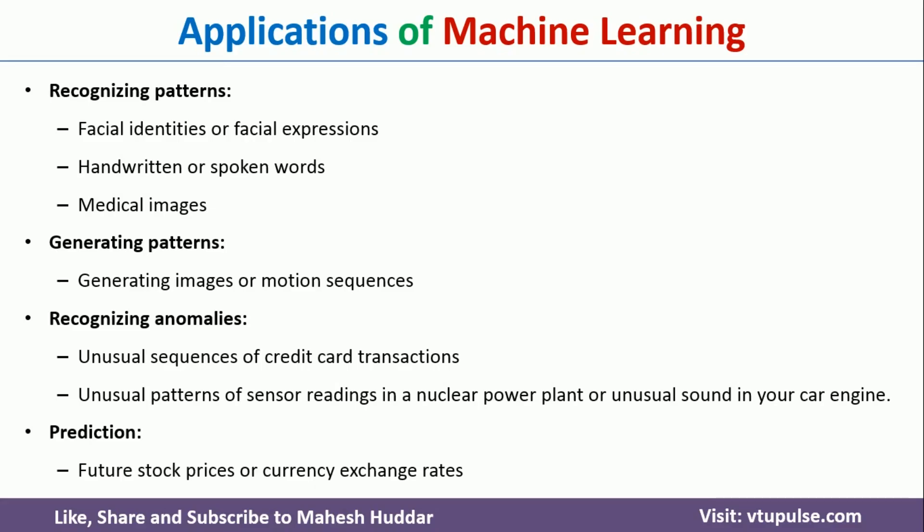Prediction is another very important application of machine learning. We try to predict what will happen in the future. For example, stock price prediction — what will be the stock price for a particular share tomorrow, after 10 minutes, or after 5 minutes. If you want to predict such things, machine learning comes into picture. Similarly, what will be the currency rate today, tomorrow, or after a week — machine learning is used for all these prediction tasks.